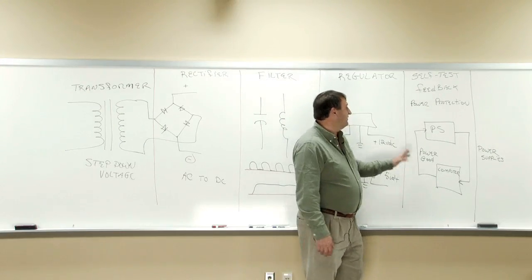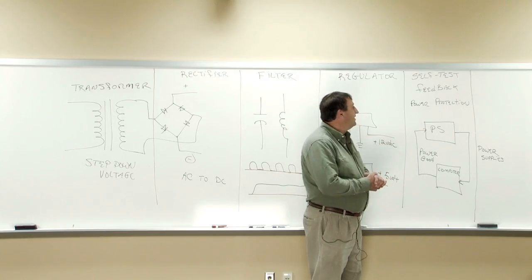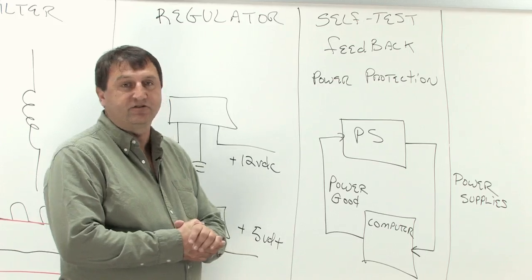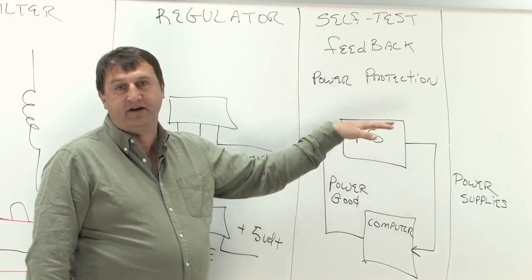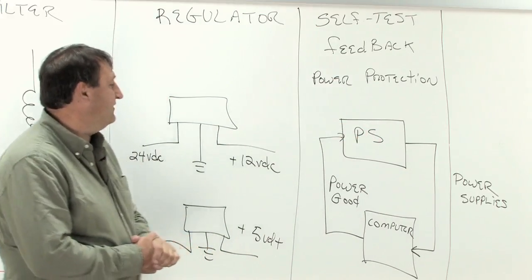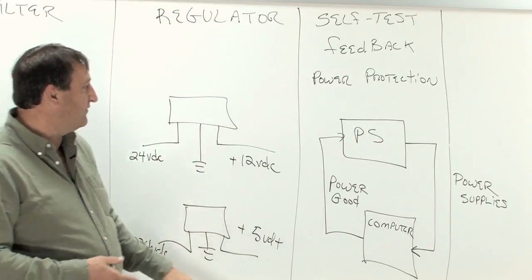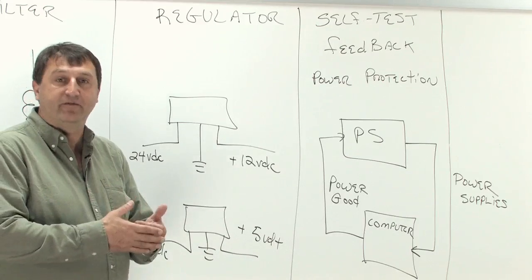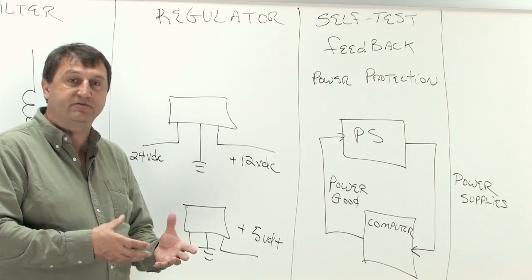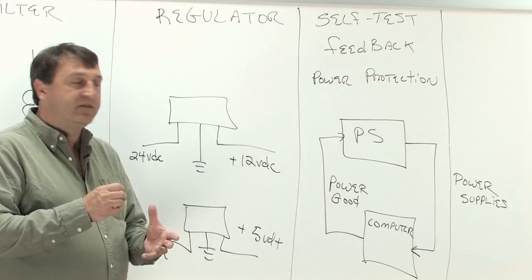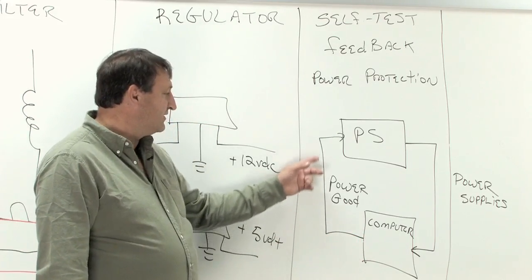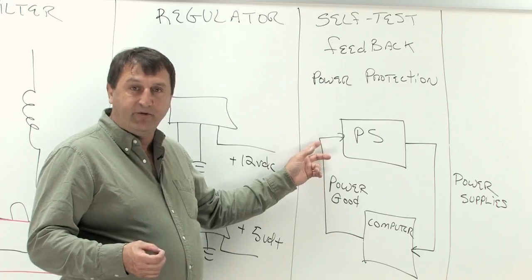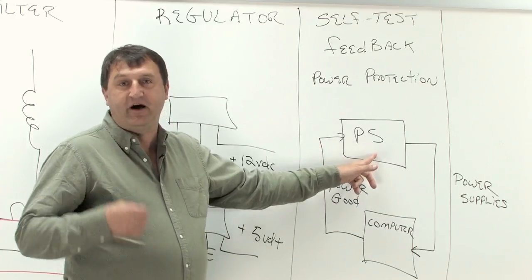Finally, we get to the last part of the power supply, which probably poses the greatest challenge to students to understand this whole concept of self-test, feedback, power protection. Basically, what that is is each one of these voltages that come out of our power supply and are fed to the motherboard and the devices within our systems are tested. And there's a feedback that comes back that says the proper amperage level and voltage levels are detected on the motherboard. And it keeps the power supply up and running.